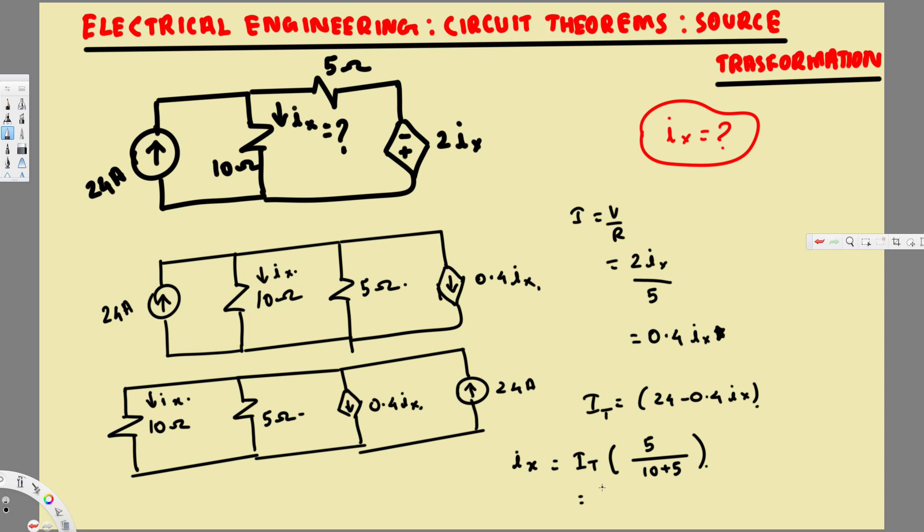I total is 24 minus 0.4Ix times 5 over 15. Now to simplify this, we can cancel to get 1 over 3, and let's continue.